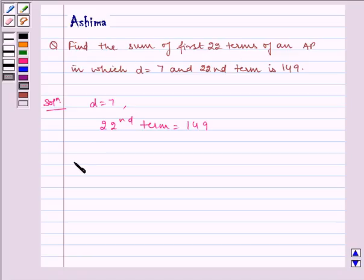So we know that a_n equals a plus (n minus 1)d. a_n, that is a_22, is given to us as 149.